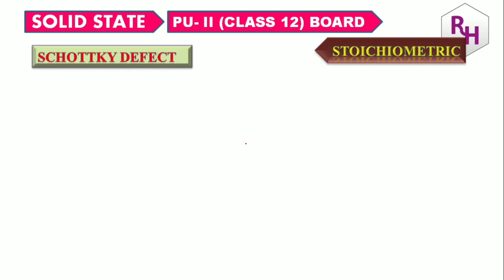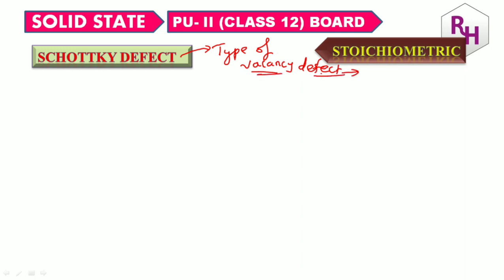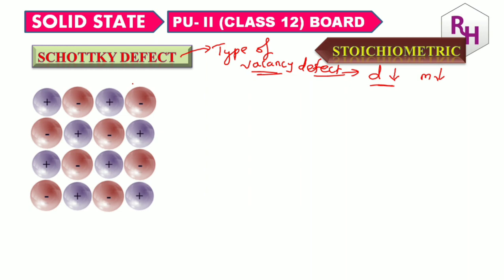The third type is Schottky defect. Remember, Schottky defect is a type of vacancy defect only — density decreases, mass decreases, same as vacancy defect. Vacancy defect is possible in ionic or non-ionic both, but Schottky defect is shown only in ionic solids — that is a very important point. In order to maintain electrical neutrality, the number of missing cations and anions will be equal.